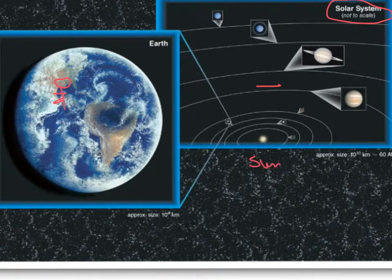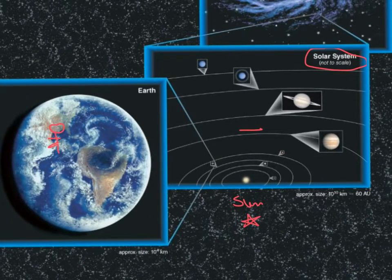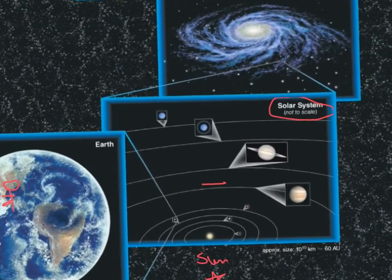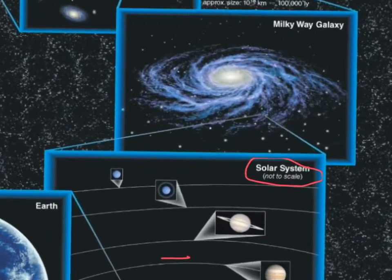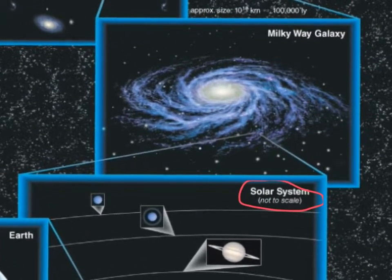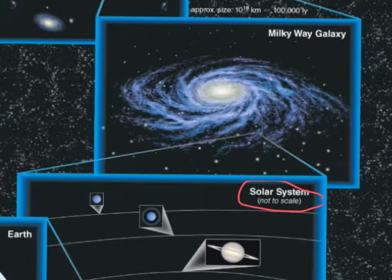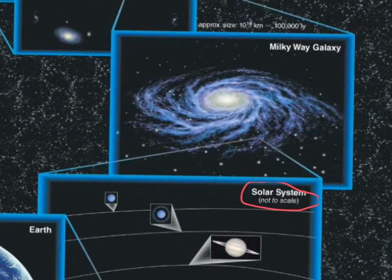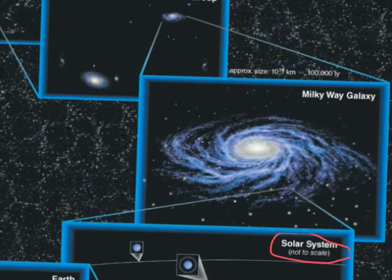Our sun is simply a kind of typical star. Our sun is a member of the Milky Way galaxy. The Milky Way galaxy is a nice, typical spiral galaxy. And our Milky Way galaxy is actually hanging out with other galaxies in a group of galaxies called the local group.